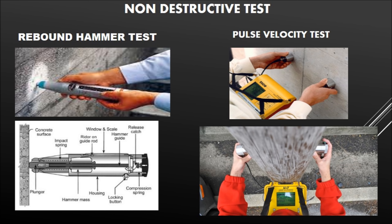We also have non-destructive tests. First is the rebound hammer test, which uses a rebound hammer gun with a spring mechanism to measure concrete strength. Second is the ultrasonic pulse velocity test, which measures electronic or electric pulse fluctuations in any concrete structure to determine quality.